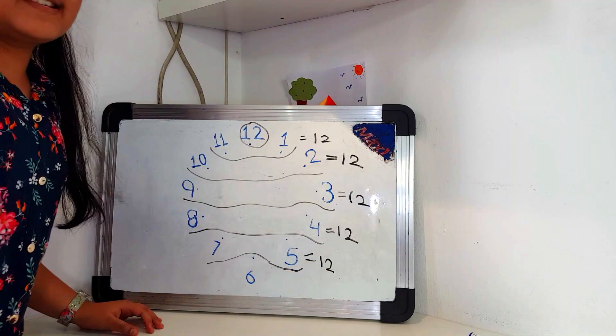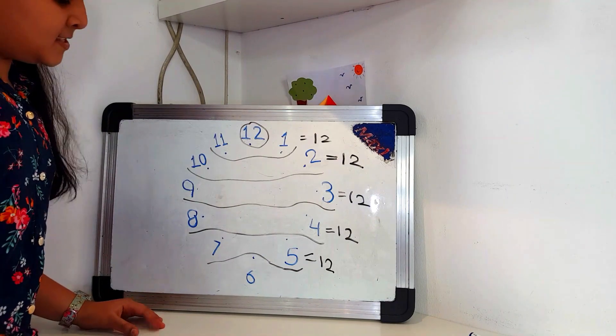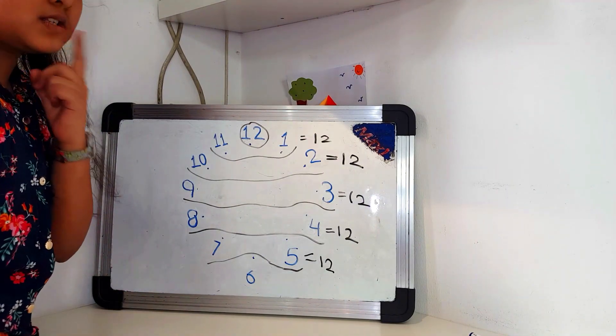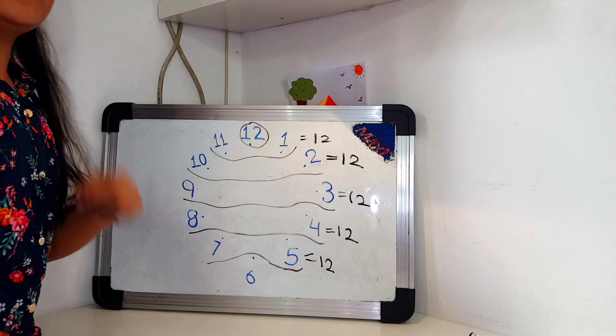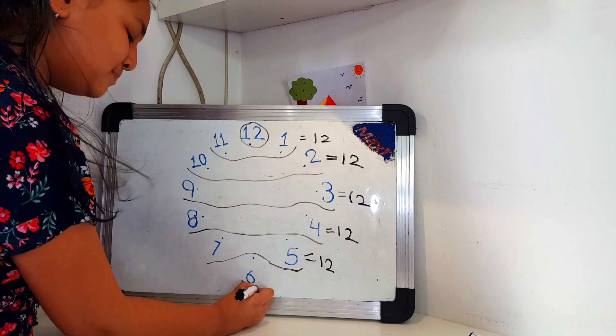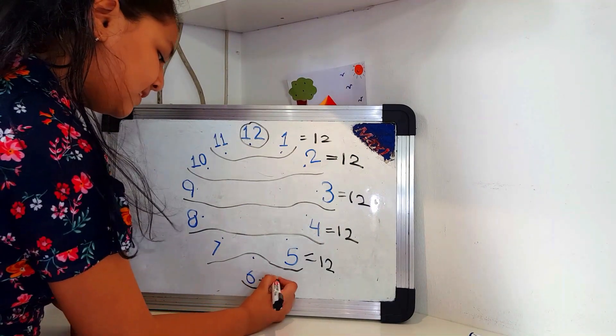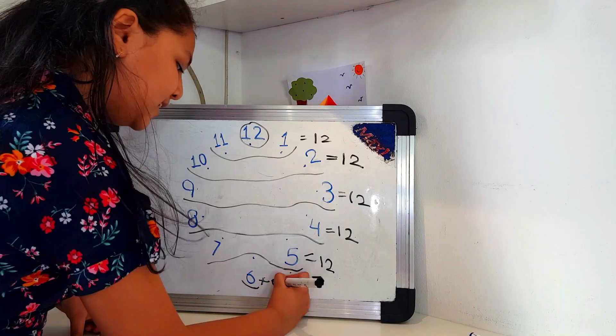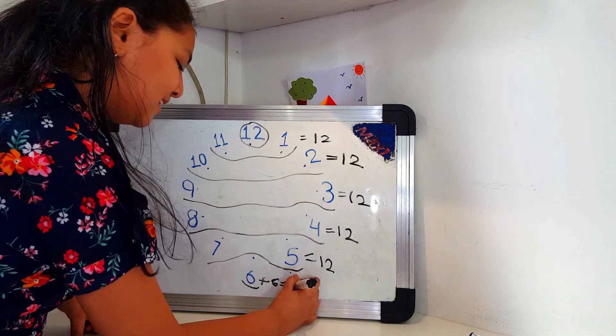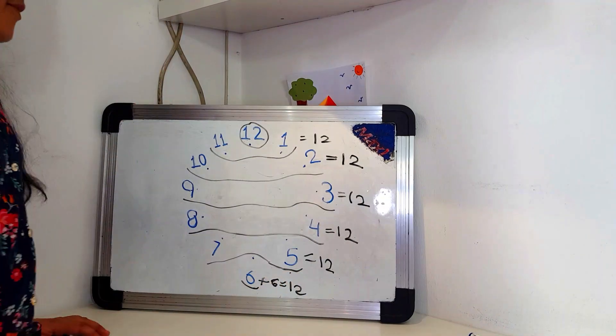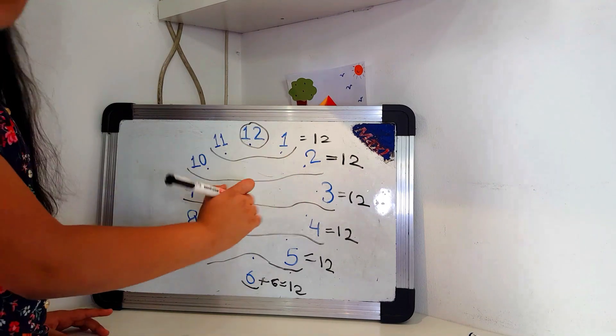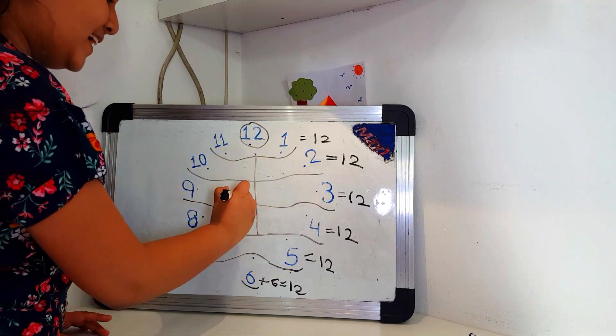And 6. Now 6. What should we do of 6? Yes, let's double 6. So 6 plus 6 is equal to 12. So friends, when you add all the numbers horizontally, you get it as 12.